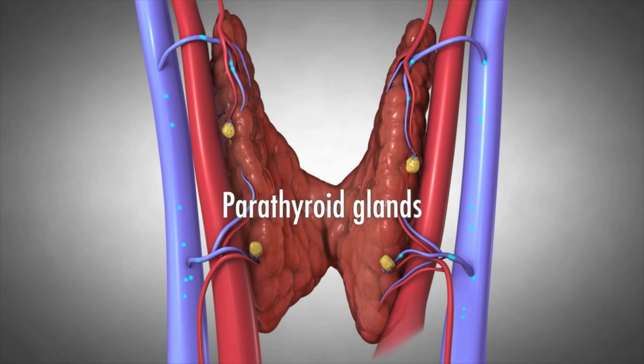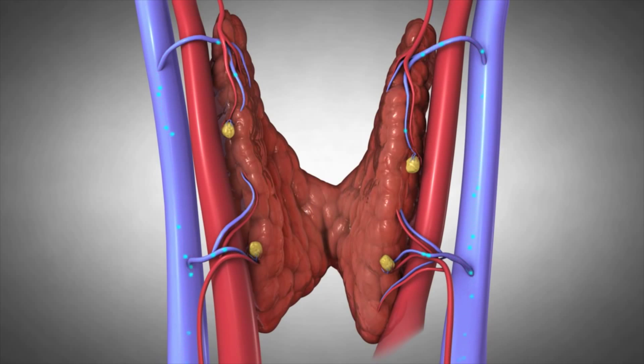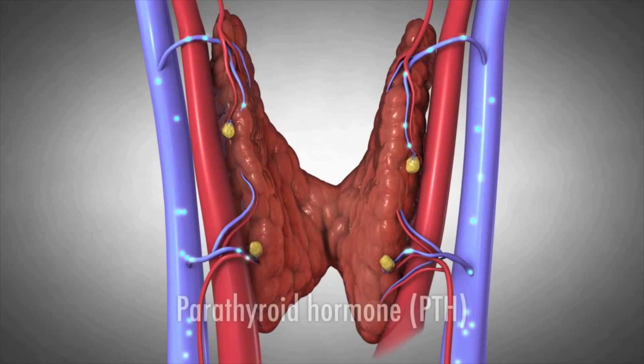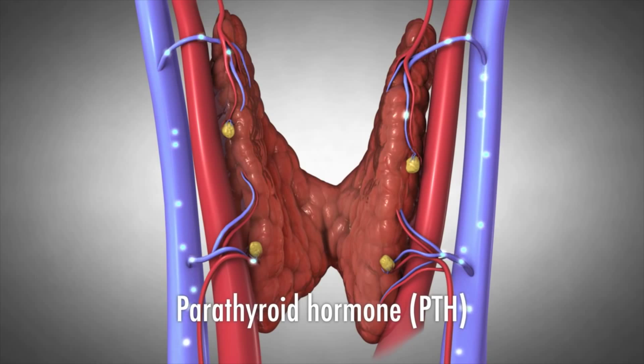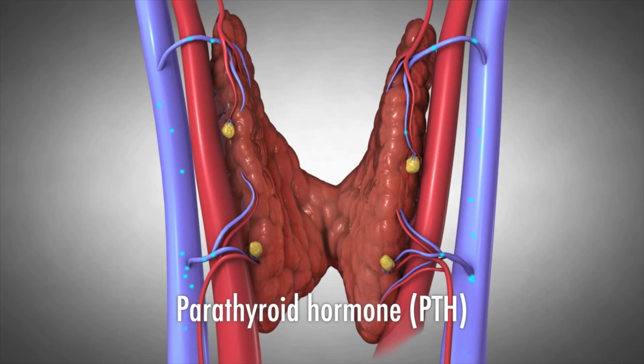Lumps and masses commonly develop in patients who've undergone radiation therapy, so these patients may also be screened with a thyroid ultrasound.